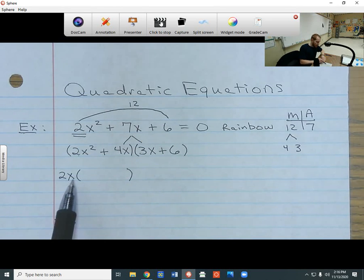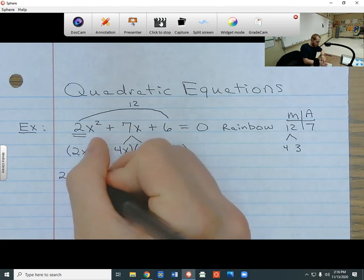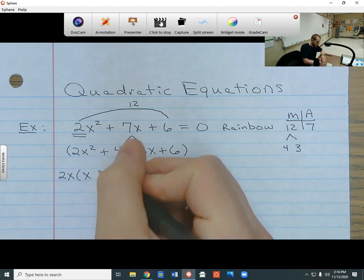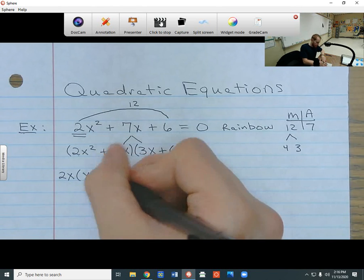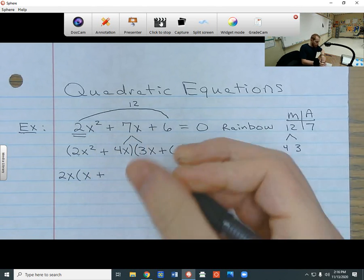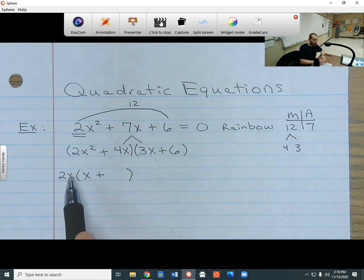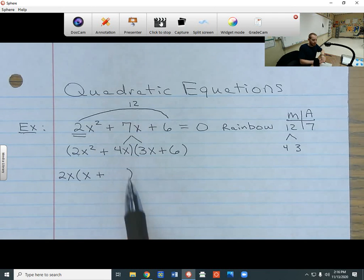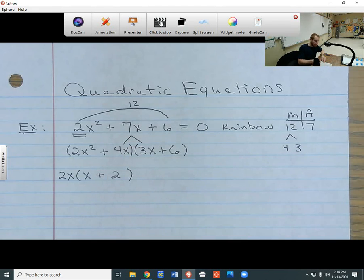Now, I already took out the 2x. I have another x that I have left on the inside, so I'm going to put that on the inside of the parentheses. The plus sign is going to come down. And then I need to figure out what goes right here. So I need to figure out what I need to multiply 2x by to get the 4x. And obviously, I need to multiply by 2. So I'm going to have a 2 right here.